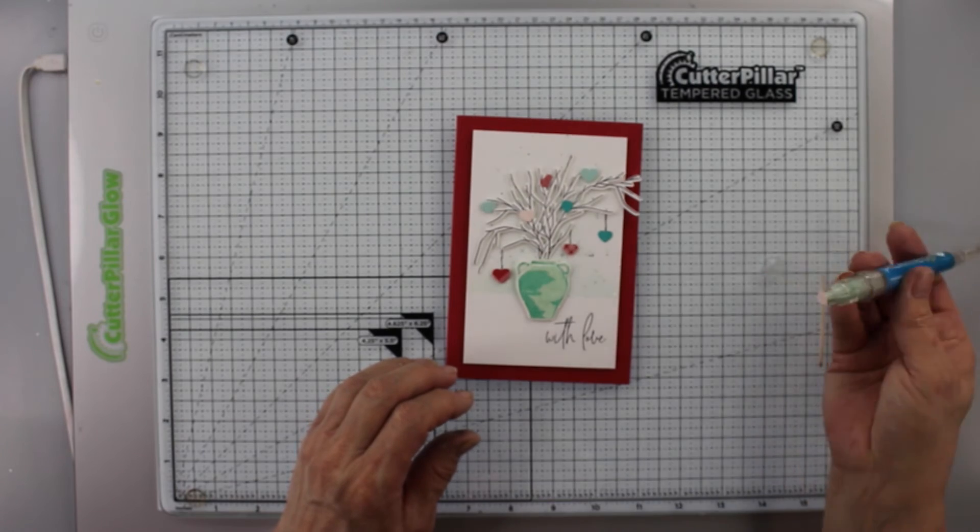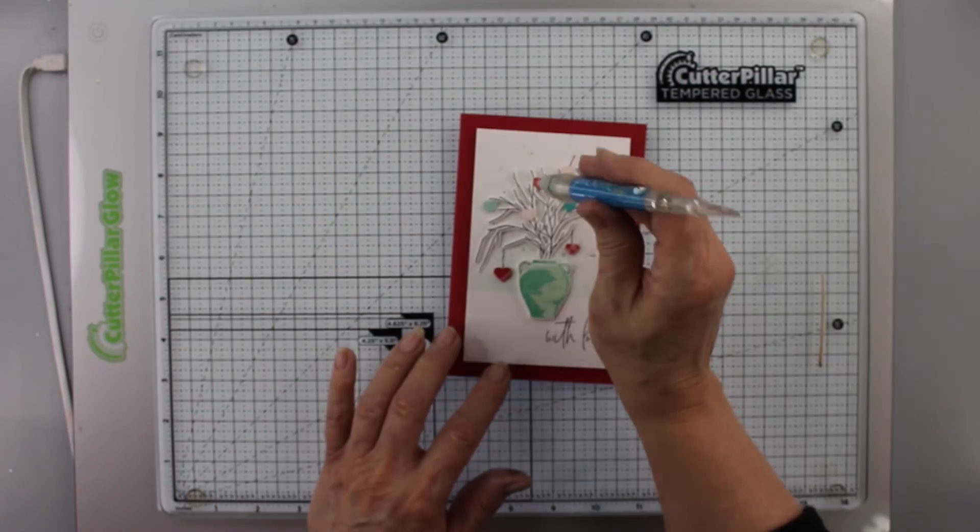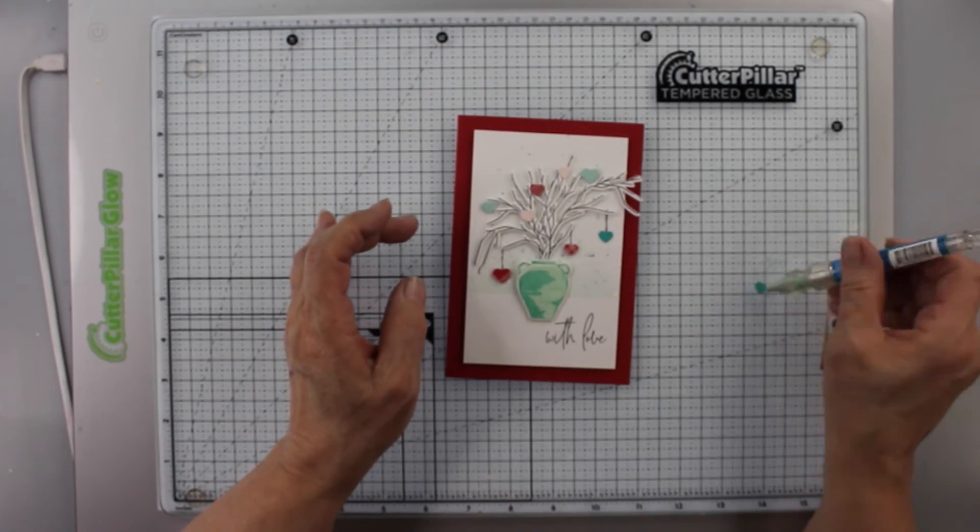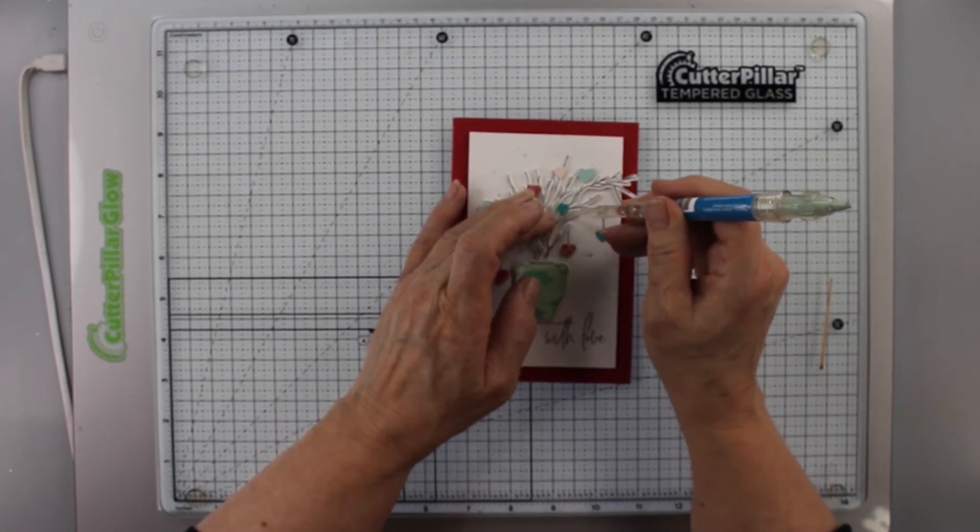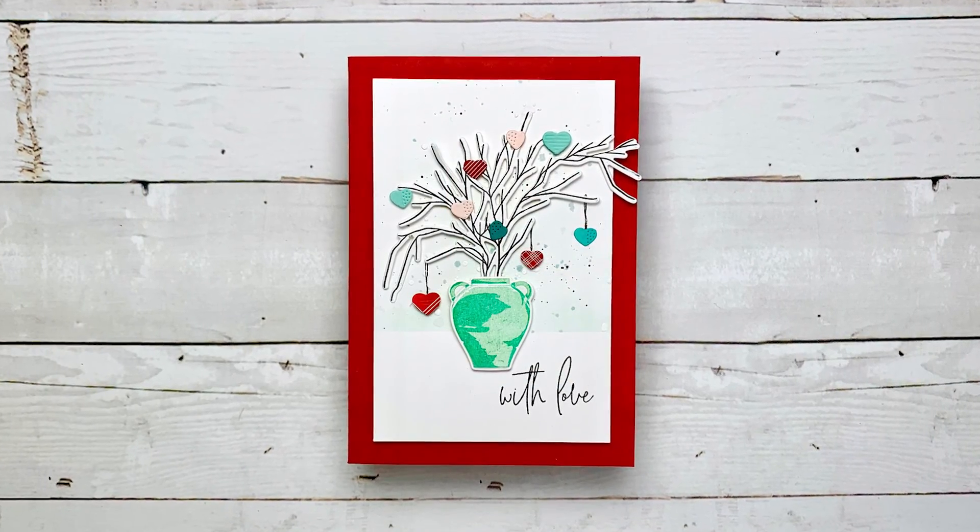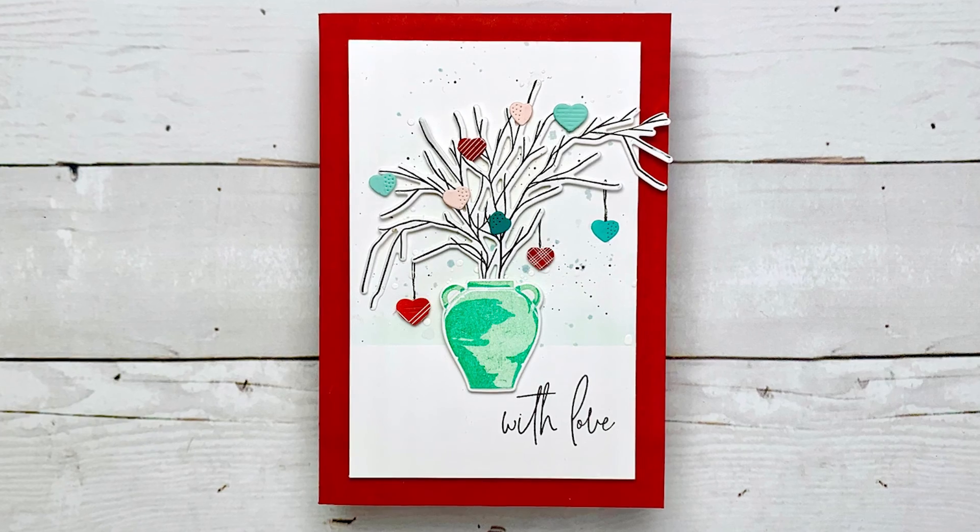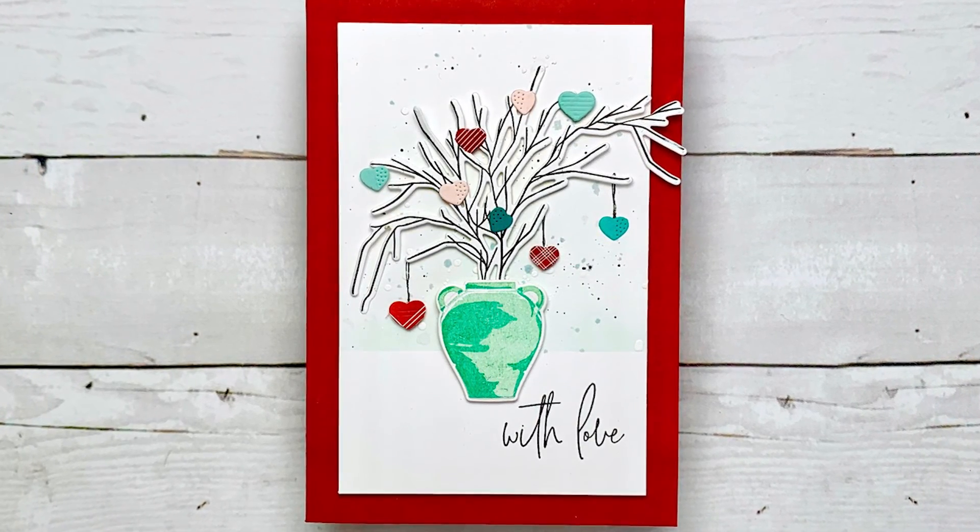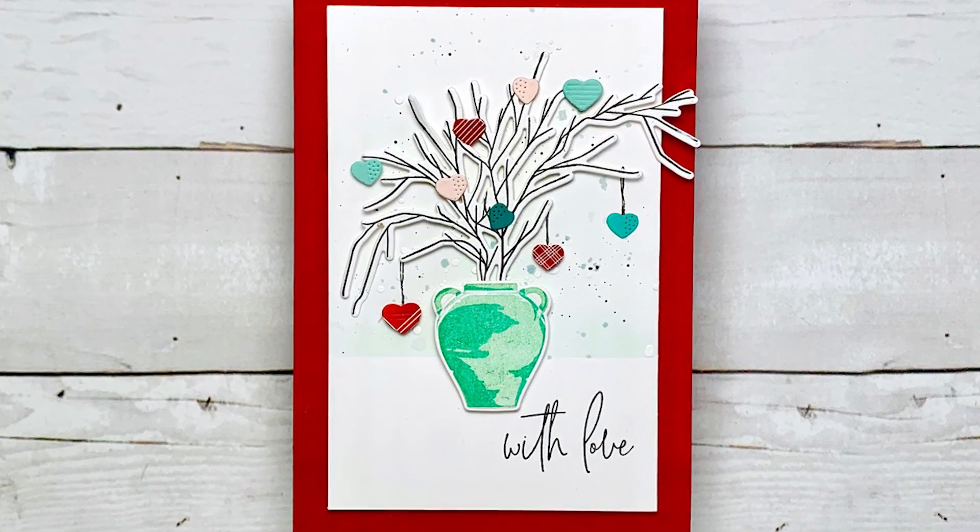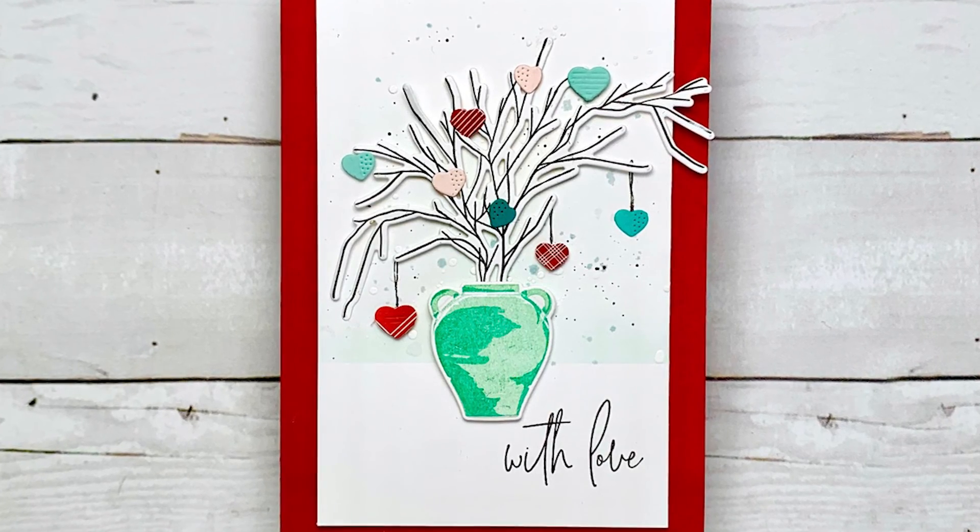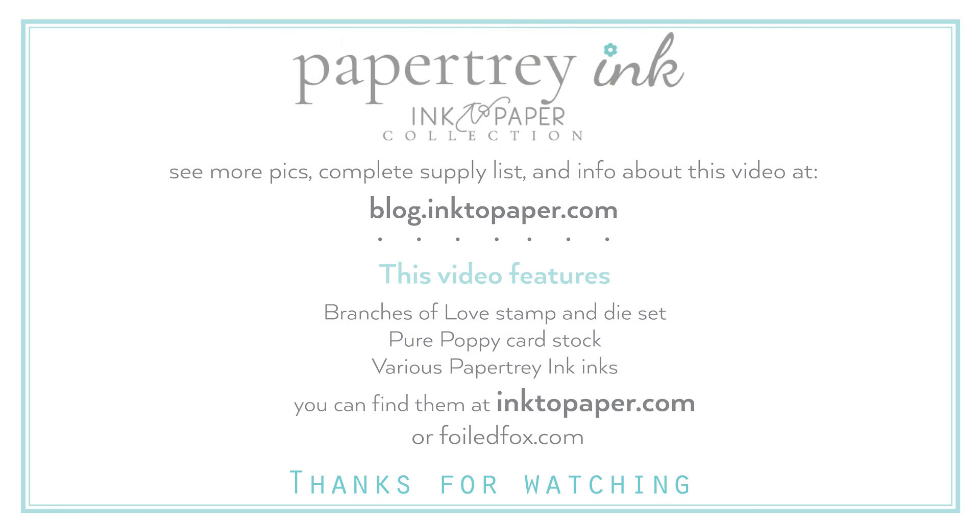So we're just going to stick this on. This is a simple card. It's great for Valentine's day, but with love, you can send this to anybody. And I think they would just be delighted by this pot filled with hearts. So there it is all done. I just think that this is such a charming stamp and die set. It is great for Valentine's, but all year round, anybody would be so happy to get this little bouquet or plant arrangement of hearts. You can use it in so many different color schemes, so many different ways. I hope you give it a try and I hope you enjoyed this video. If you did, please give us a thumbs up. If you haven't already, please subscribe and pop over to blog.ink2paper.com and see more inspiration. You can also go to foilfox.com. We have a complete supply list there and oodles of inspiration there as well. Thanks so much for joining us and we'll see you next time.